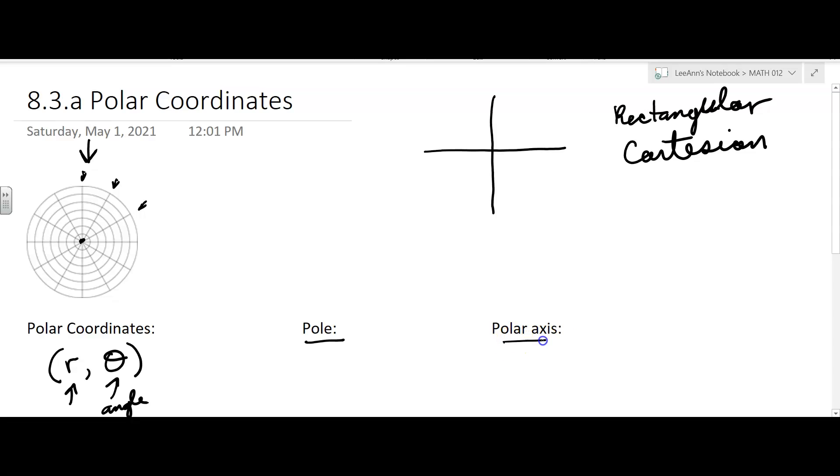The polar axis is the positive x-axis. Well, I guess we shouldn't call it that, but it's this right here. That would be the way we're going to measure our angles from.